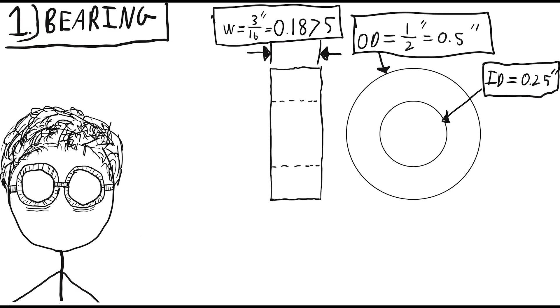So let's get started with the bearing. The size C yoyo bearing, which is defined in inches, is 0.1875 inches wide, or 3/16 of an inch wide, and it has an outer diameter of 0.5 inches and an inner diameter of 0.25 inches.